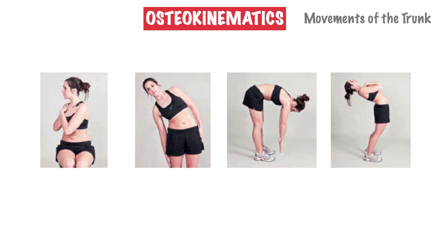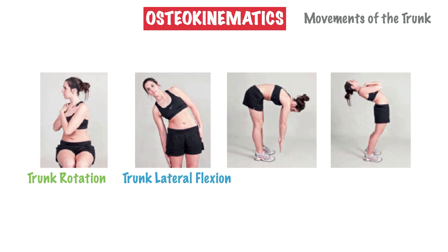Next are the osteokinematic movements of the trunk. On the far left in our first picture we have trunk rotation, which refers to twisting the trunk or torso to either the left or right side — the direction of movement is usually added on. Next, similar to the neck, is lateral flexion, where the side bending motion occurs at the trunk. In our third picture we have trunk flexion, also seen as the classic toe touch stretch. Last but not least is trunk extension, characterized by leaning backwards while maintaining an erect posture.